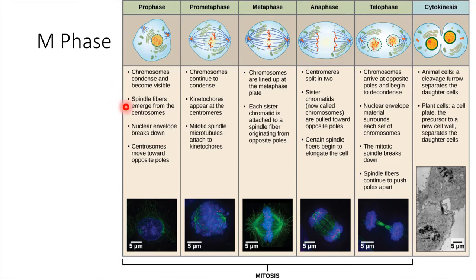There are also some special fibers in the cell called spindle fibers. These are ultimately going to attach to the chromosomes and help to pull them to where they need to be. So those fibers start to form.